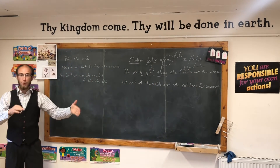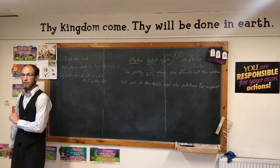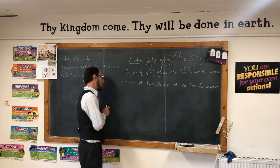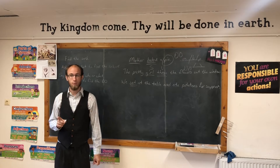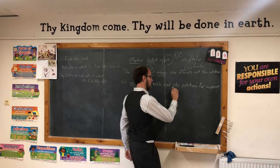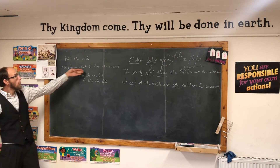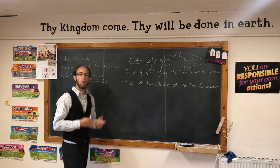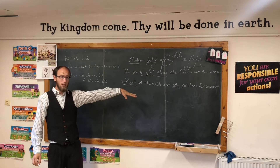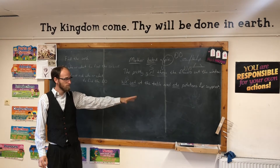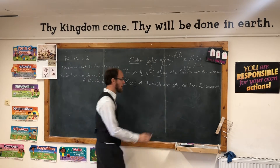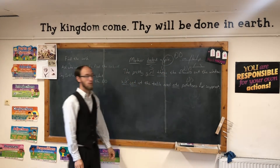Let's do the next one: 'We sat at the table and ate potatoes for supper.' Find the verb. Always find the verb first — it will be the easiest thing to find. Sat. Is there any more verbs? Ate as well. Ask who or what to find the subject — who or what sat and ate? We. Now say the subject and verb and ask who or what. We sat — who or what? Nothing. We ate — who or what? Potatoes. Potatoes is the direct object.